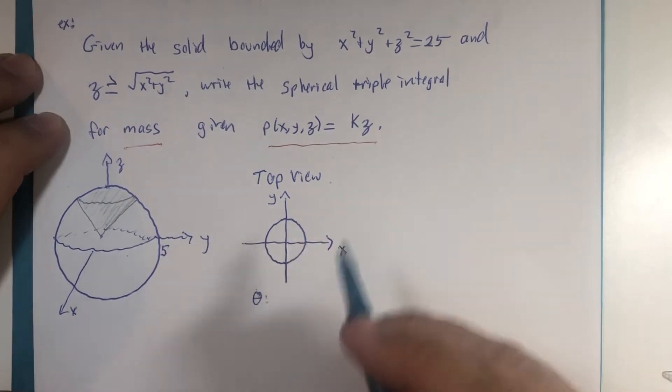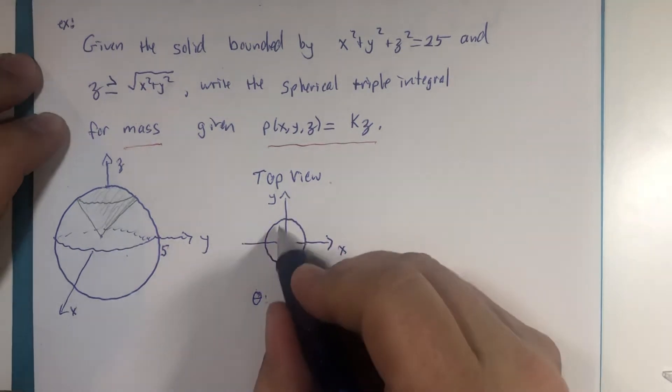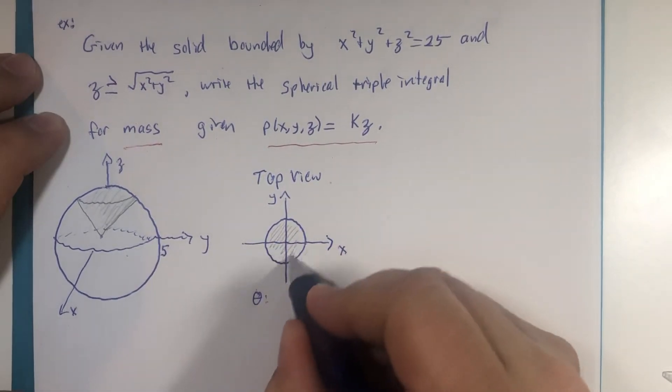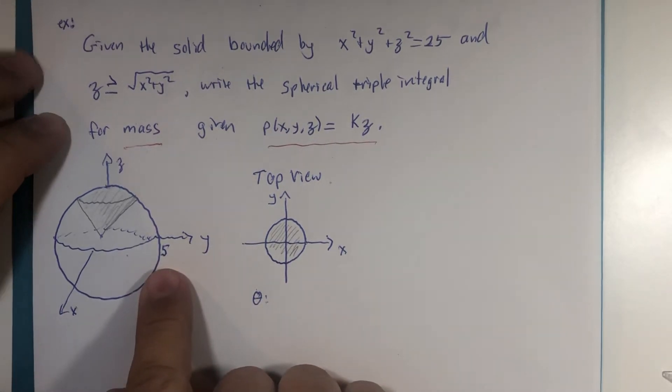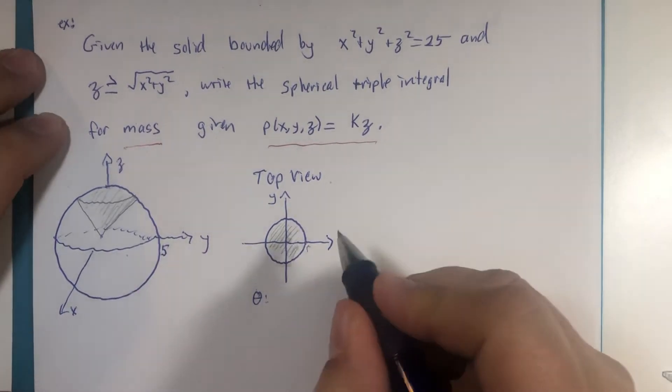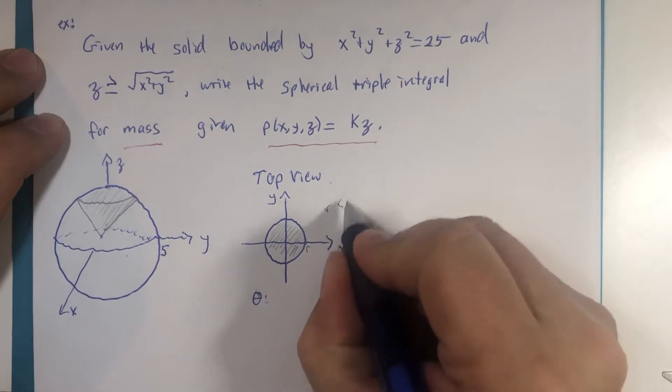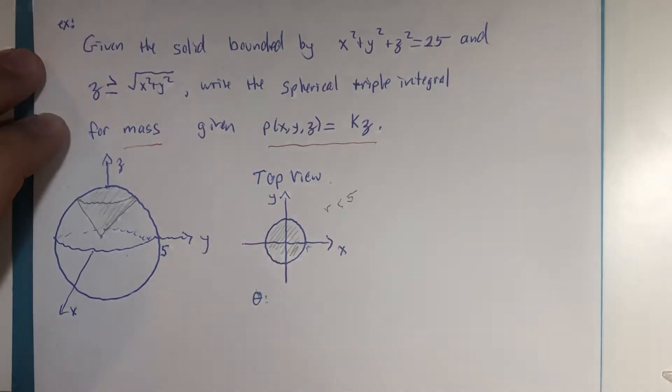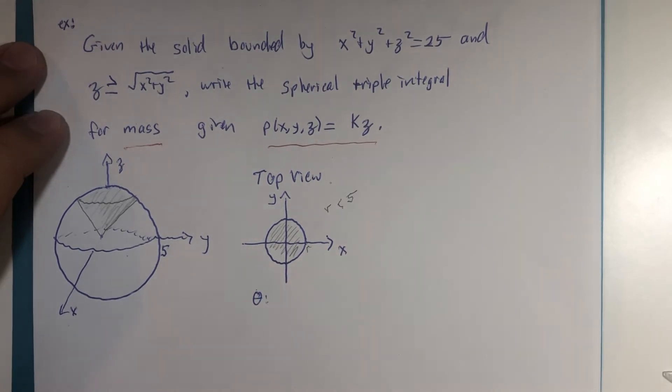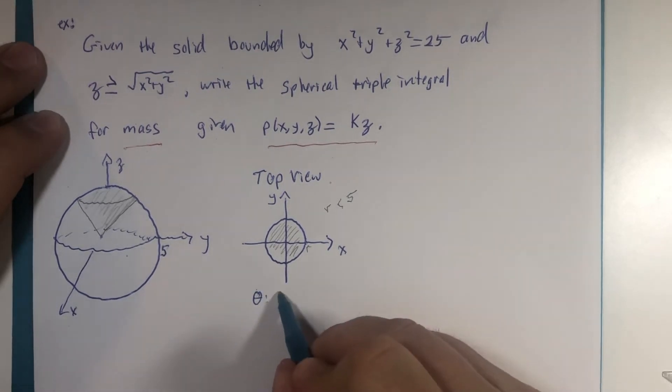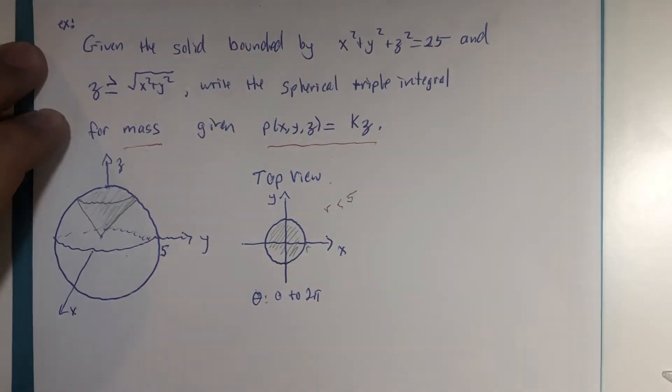And we should be able to determine from looking at this picture that it rotates all the way around the z-axis. So the top view is a circle, and another item from previous examples is that this circle has a smaller radius than 5. Whatever that radius is, that radius is less than 5. But until I know that I need the radius, I'm not going to find it. I do need theta, and theta goes from 0 to 2π.